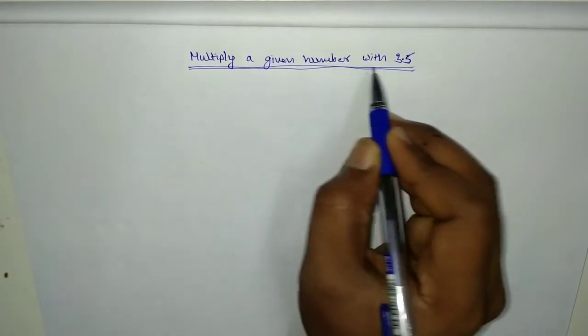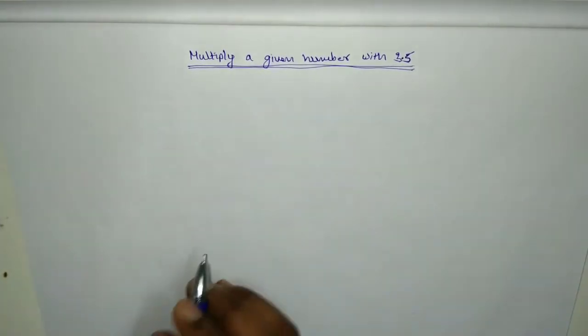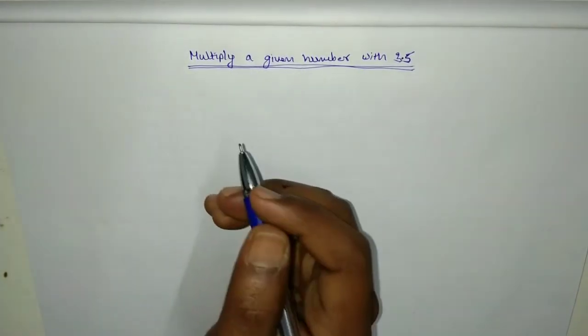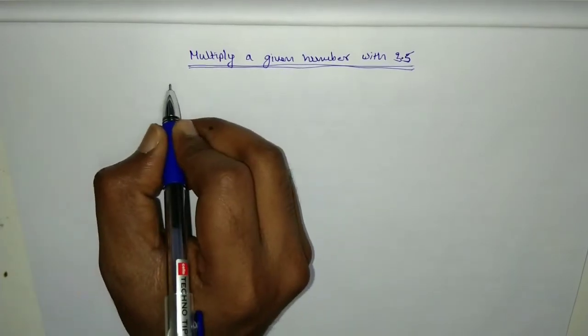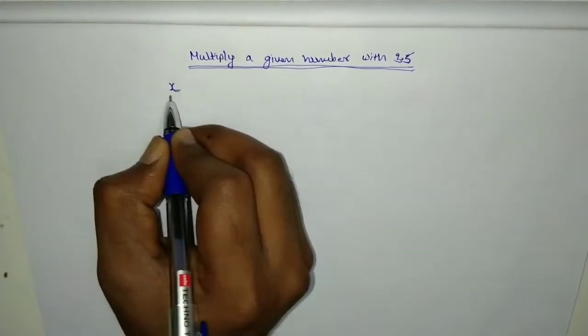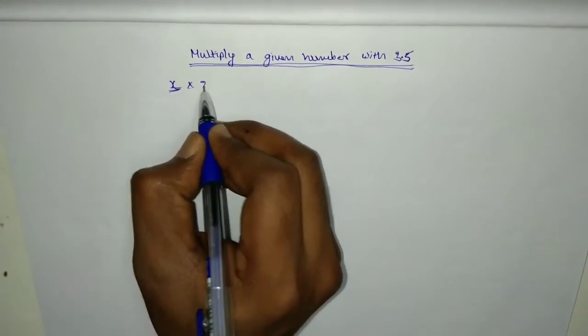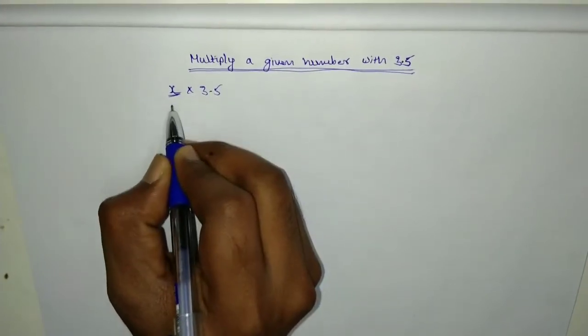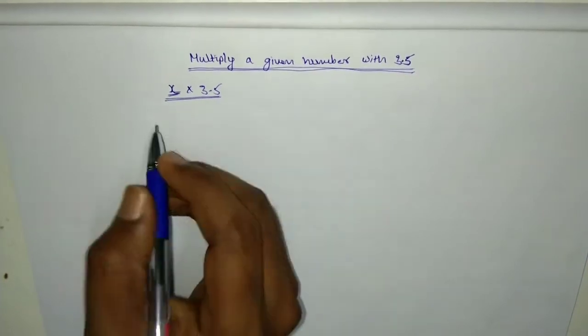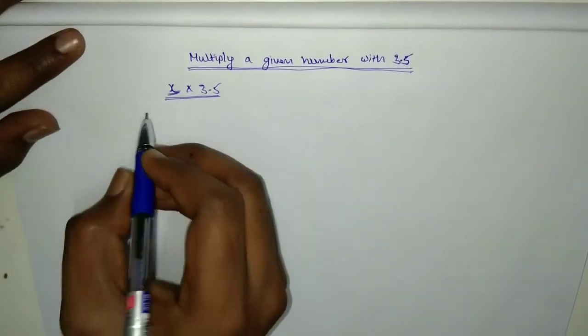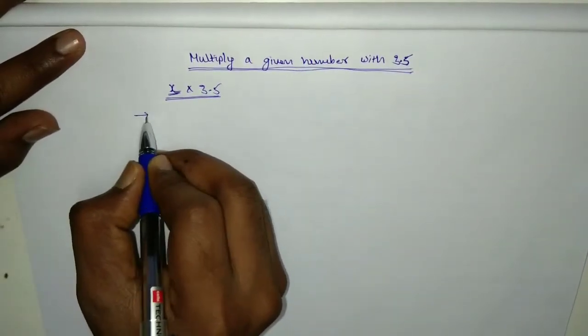Let us take a given number as x, so we need to multiply with 3.5. If you can see, we can convert this into...